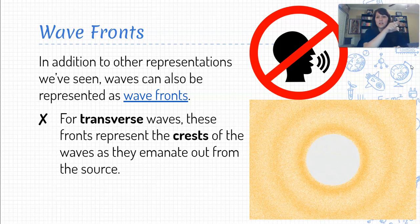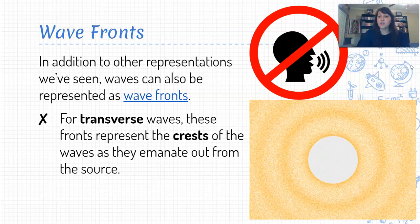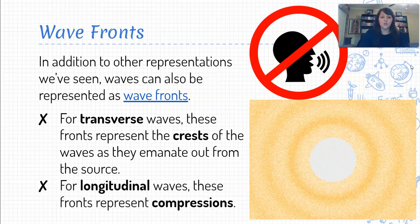So as we see the wave moving along and a single crest is moving along, that's represented by one of these wave fronts here. For longitudinal waves, on the other hand, they don't have crests and troughs.